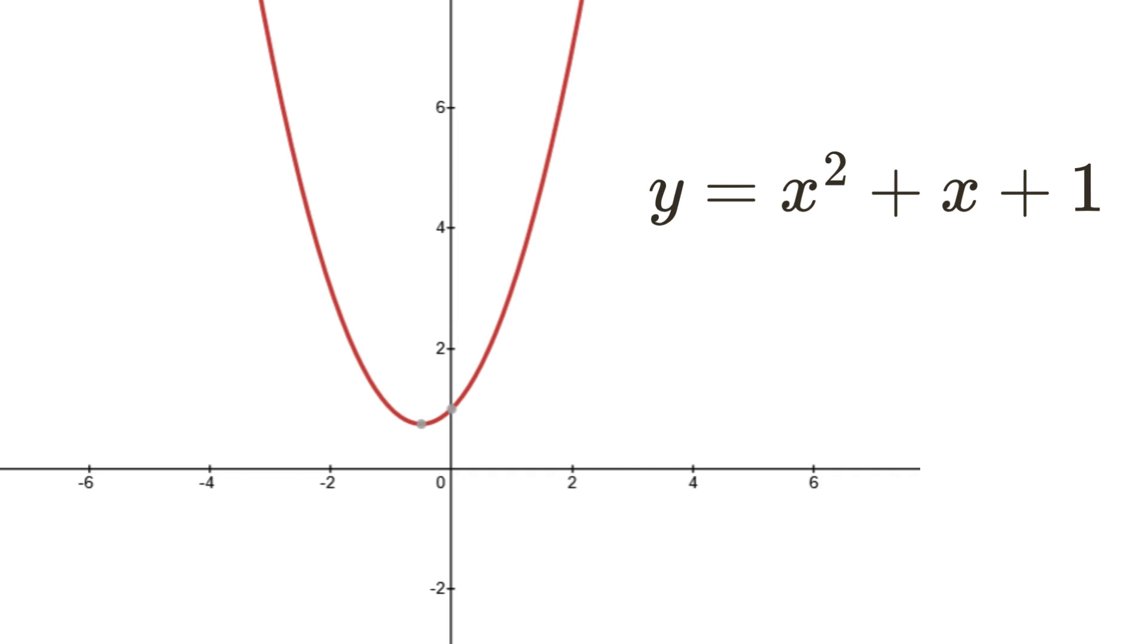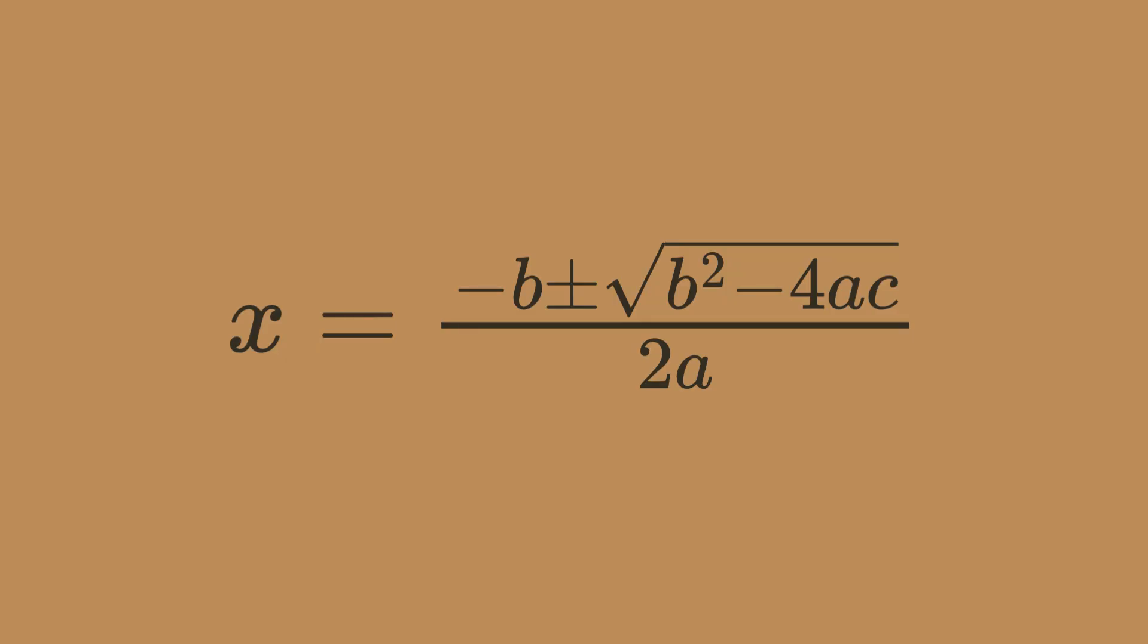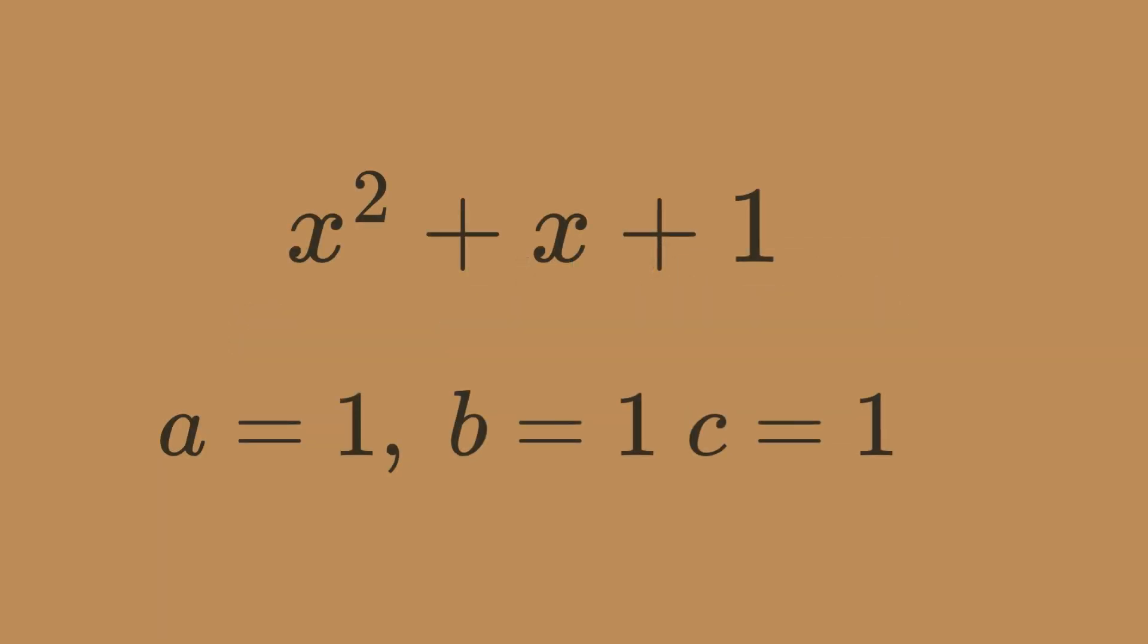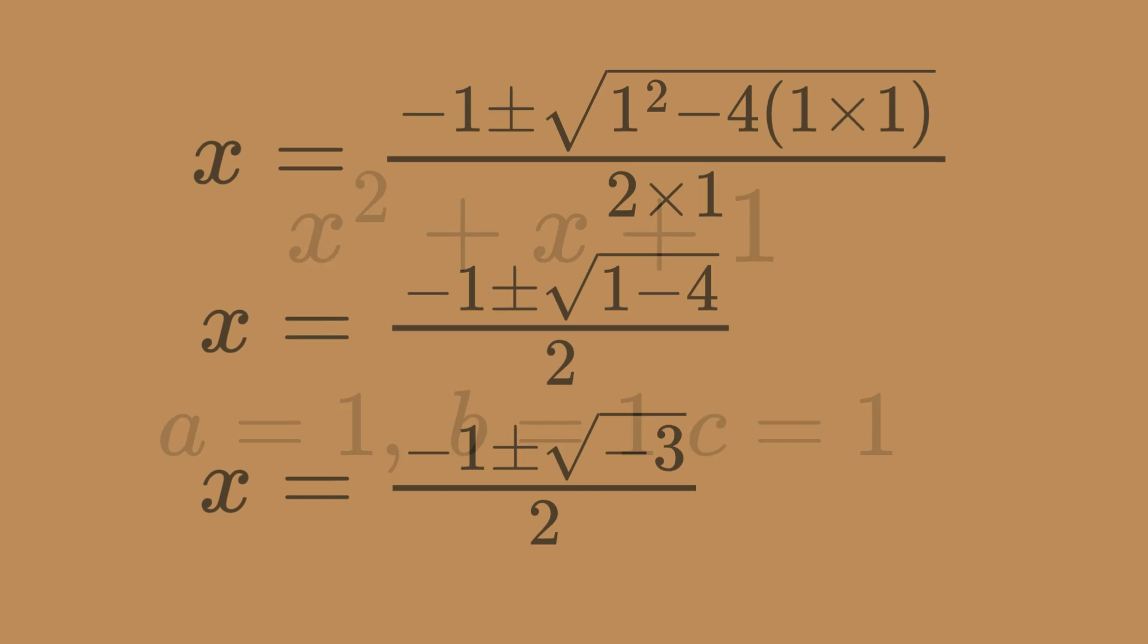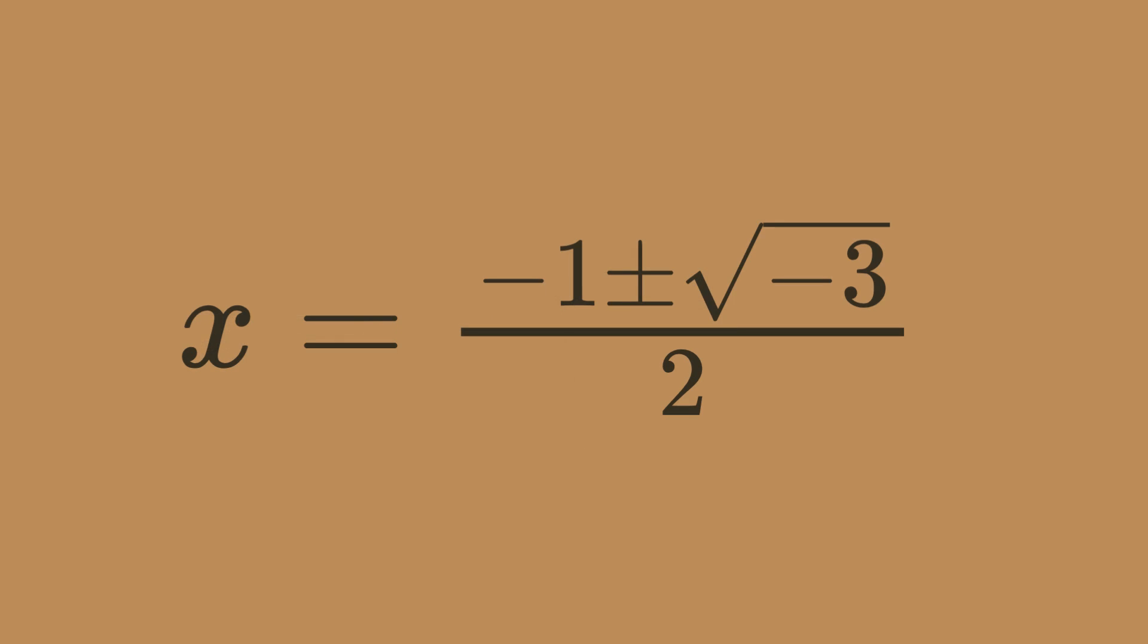But what if we try another approach? We can use the quadratic formula to find what x should be. In this case, the coefficients of each term are each one, and we can easily substitute these into the formula and solve for x. After a little bit of simplification, we will find a small problem. We need to find the square root of minus three. But how can this be possible? A squared real number is always positive.